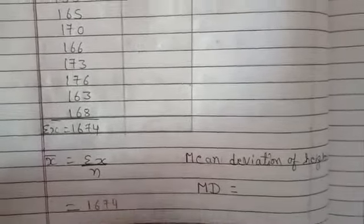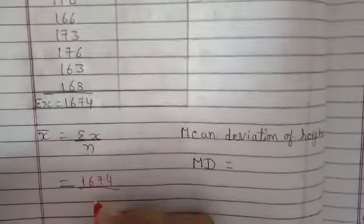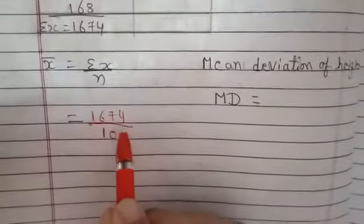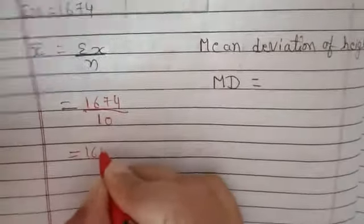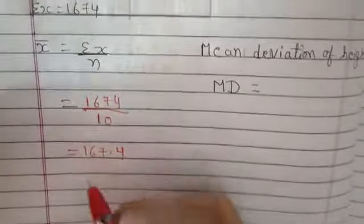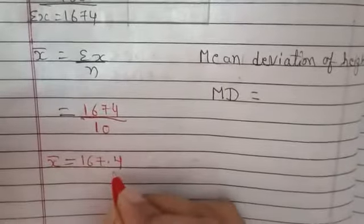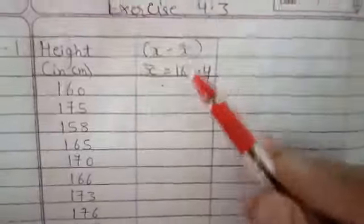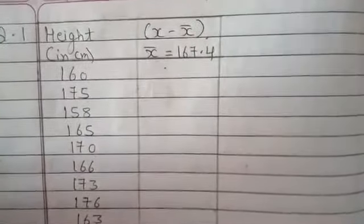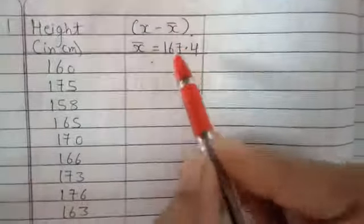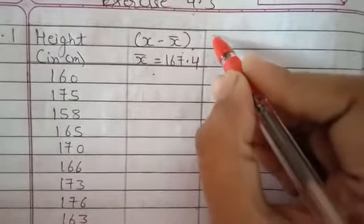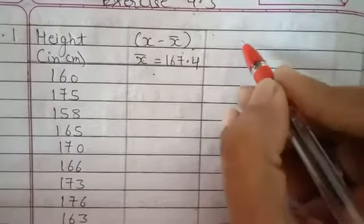Now I will find x-bar, that is sigma x divided by n. Sigma x is 1674 and number of observations is 10. So 1674 divided by 10 equals 167.4. This is my x-bar, or mean. Now I will find x minus x-bar. I need to find the absolute value, ignoring negative signs, so I can directly make an absolute deviation column.